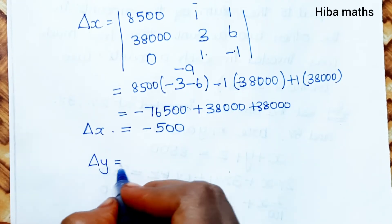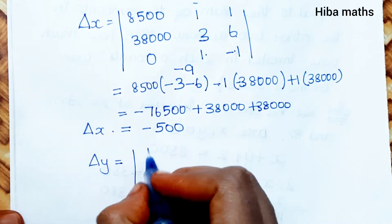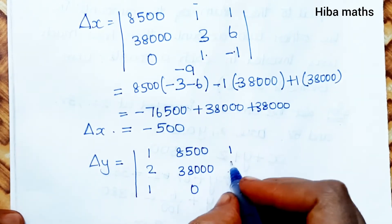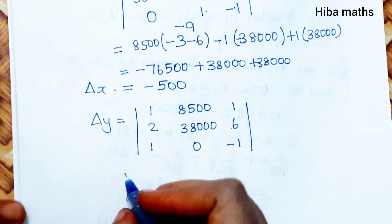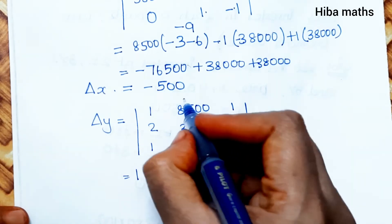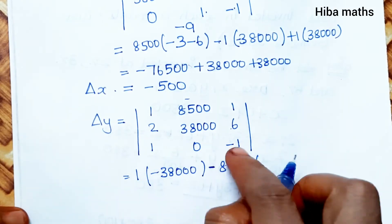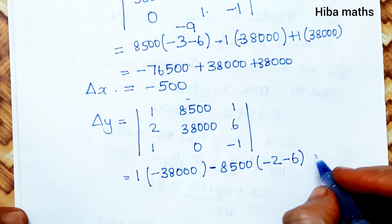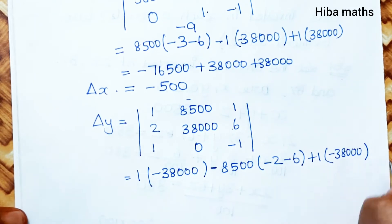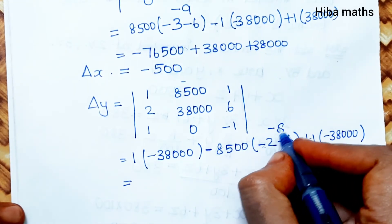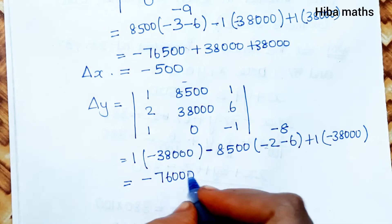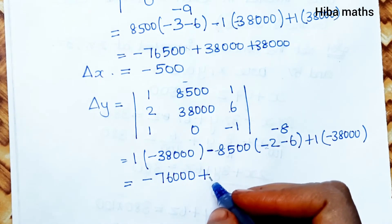For Δy, we replace the second column with constants 8500, 38000, 0. Expanding the first row: 1 times (38000×(−1) − 0) minus 8500 times (2×(−1) − 6×1) plus 1 times (2×0 − 38000). This gives −38000 minus 8500×(−8) plus (−38000), so Δy equals −38000 + 68000 − 38000 = −8000.